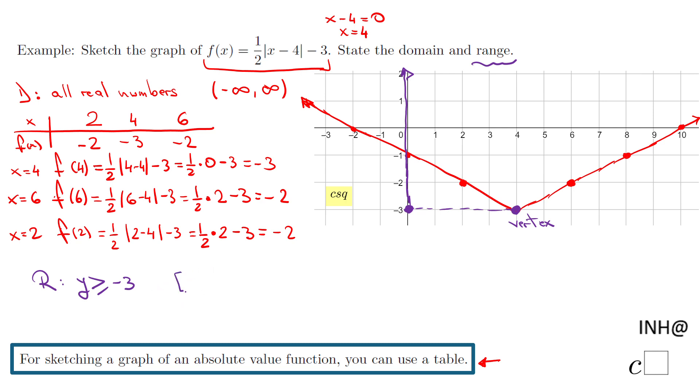If you need the interval notation, this is the way: negative 3 to infinity. You notice a bracket at negative 3 because we can have negative 3, and parenthesis at infinity. That's it for this example.